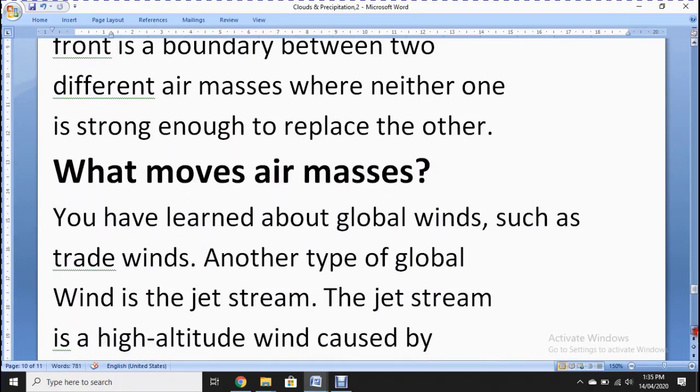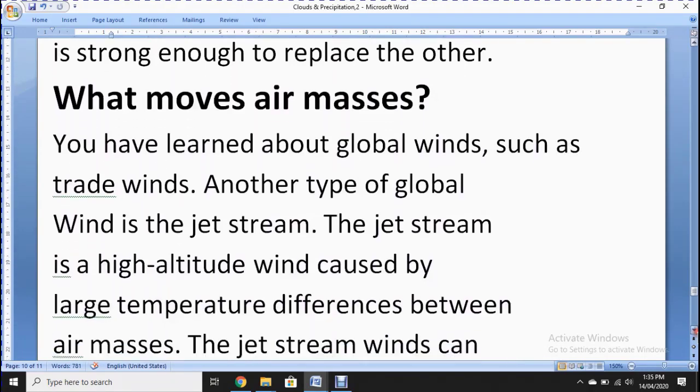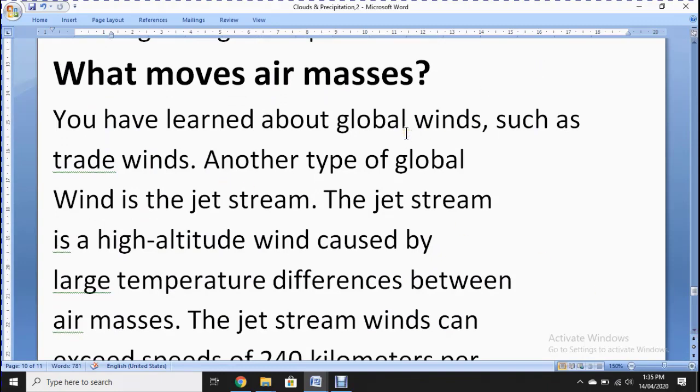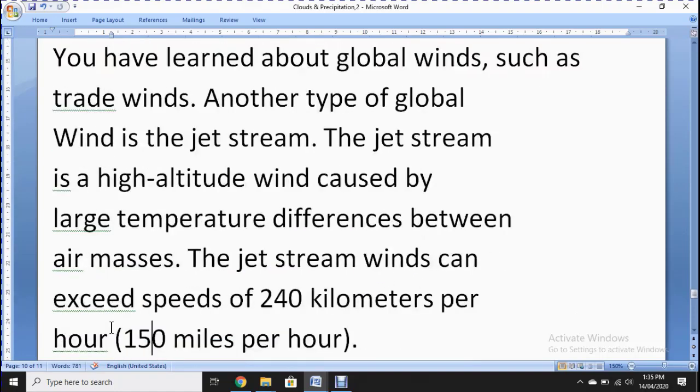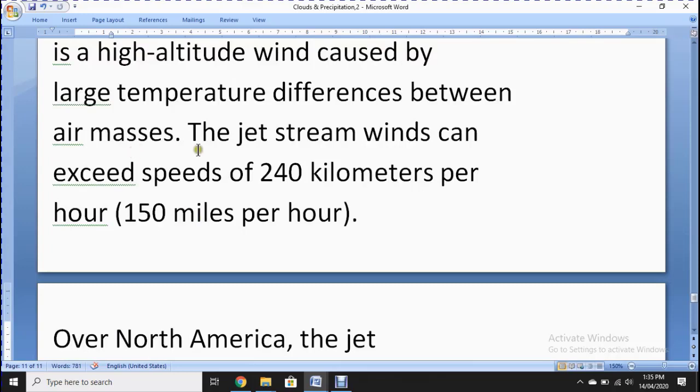The next question is: What moves air masses? You have learned about global winds such as trade winds. Another type of global wind is the jet stream, a high-altitude wind caused by large temperature differences between air masses. Jet stream winds can exceed speeds of 240 kilometers per hour or 150 miles per hour.